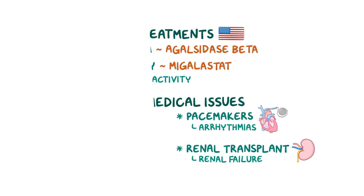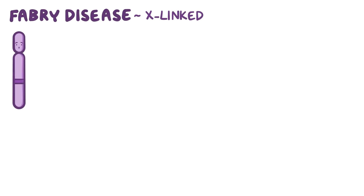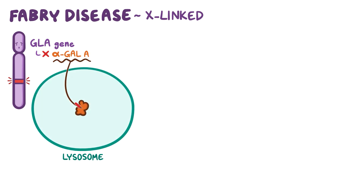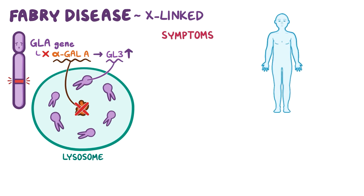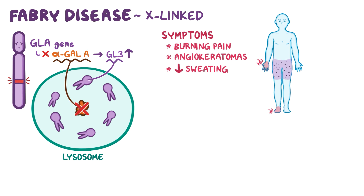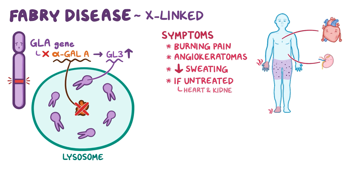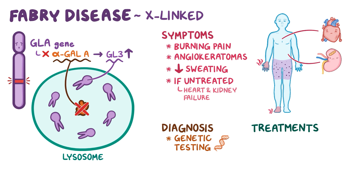As a quick recap: Fabry disease is an X-linked condition caused by a change in the GLA gene, which leads to a lack of alpha-galactosidase A enzyme. Without this enzyme, large molecules like GL3 build up and cause progressively worsening health issues. Symptoms include burning pain in the hands and feet, angiokeratomas, and decreased sweating. Left untreated, it may cause heart and kidney failure. Early diagnosis through genetic testing is key, and treatment can be done with synthetic alpha-galactosidase A or chaperone therapy with migalastat.